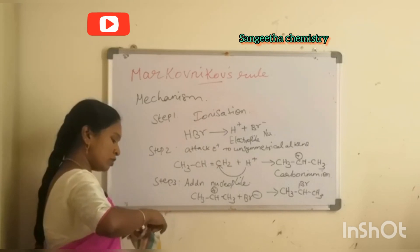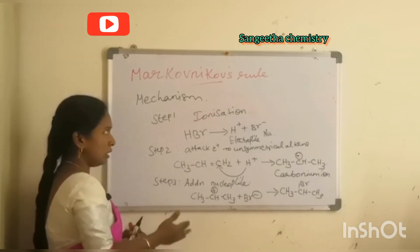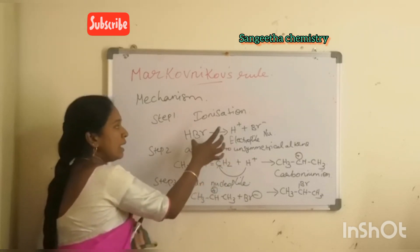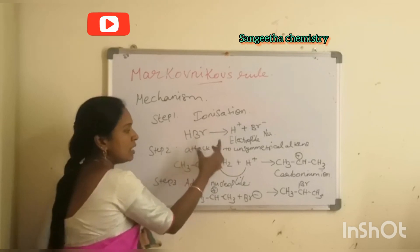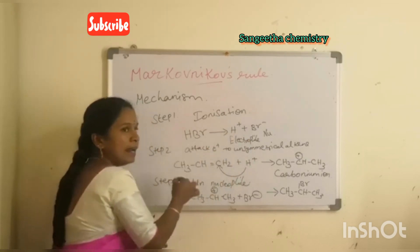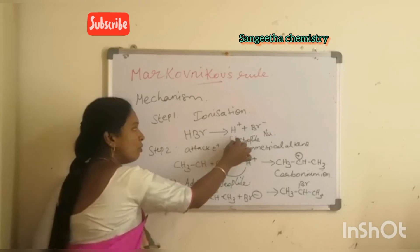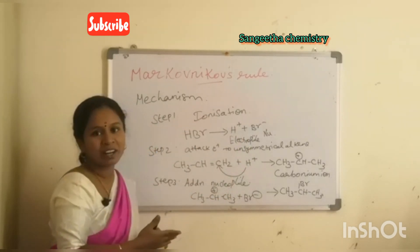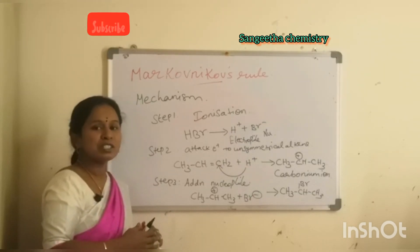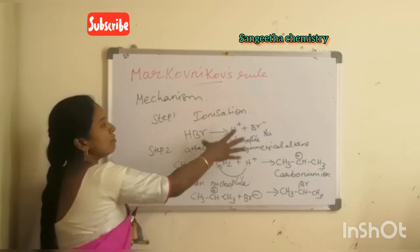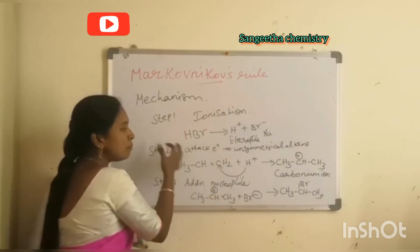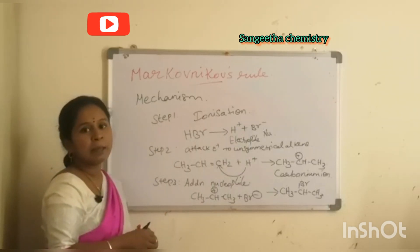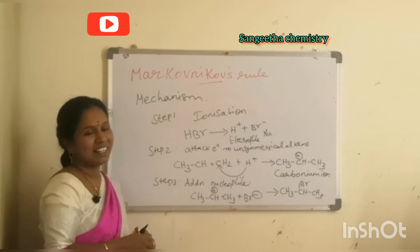To summarize: Markovnikov's Rule states that when an unsymmetrical alkene reacts with an unsymmetrical reagent, the hydrogen of the reagent adds to the double-bond-containing carbon which contains the highest number of hydrogen atoms. The mechanism involves three steps: ionization, attack of the electrophile to the unsymmetrical alkene, and addition of the nucleophile. Thank you, students.